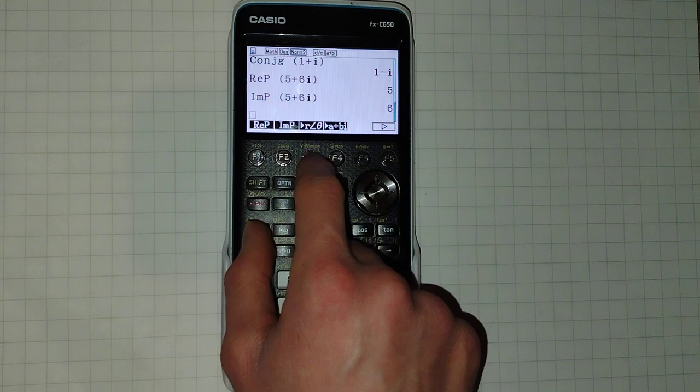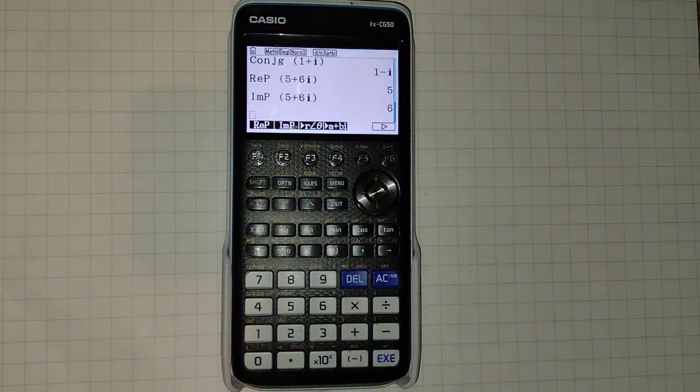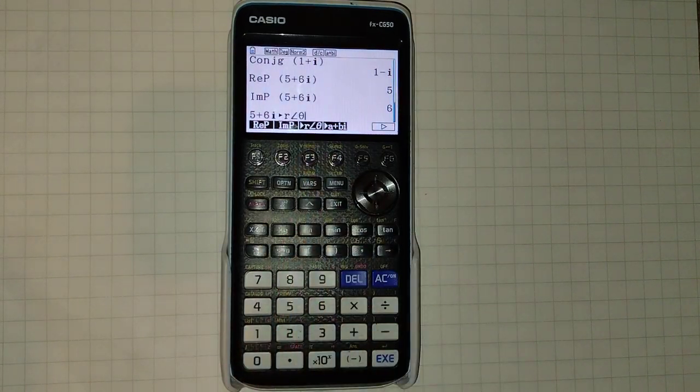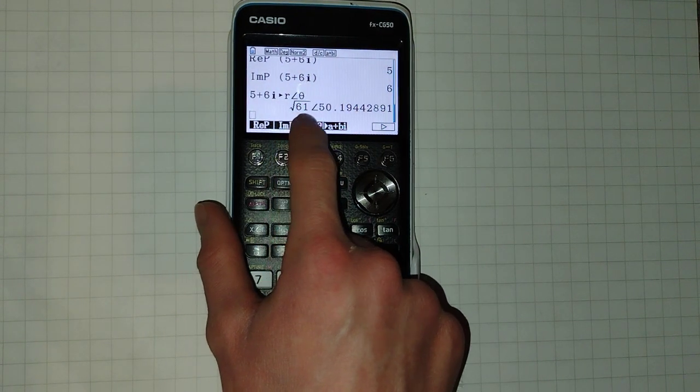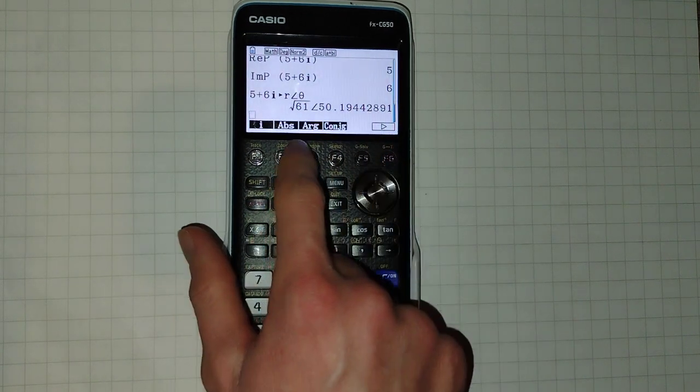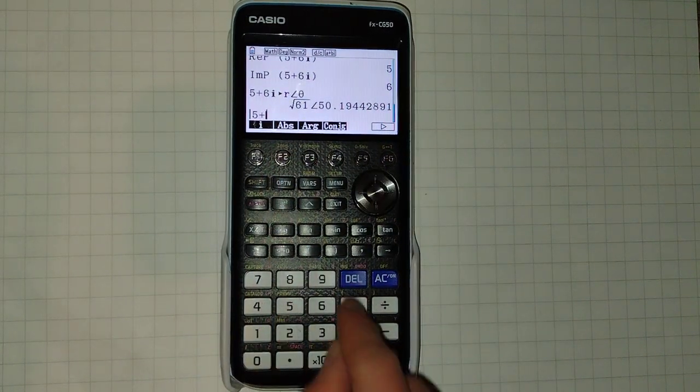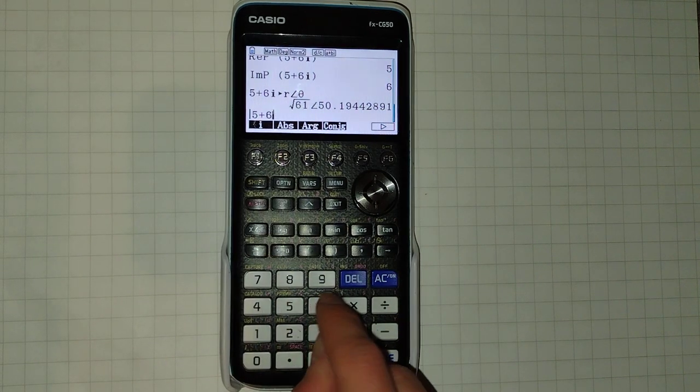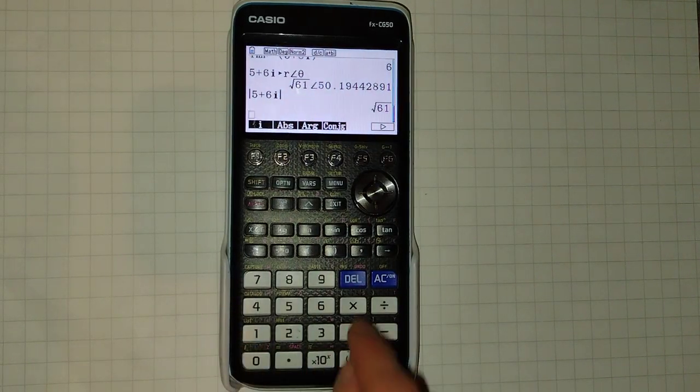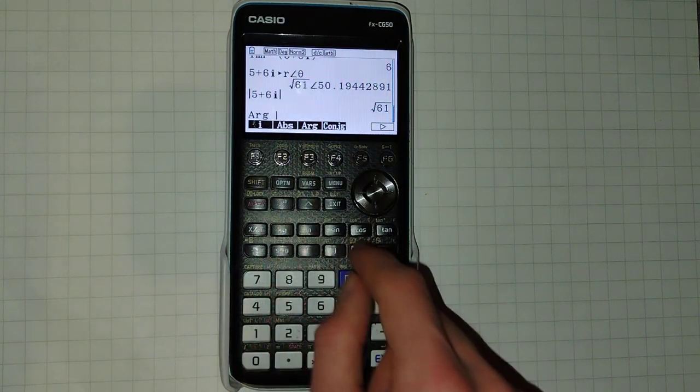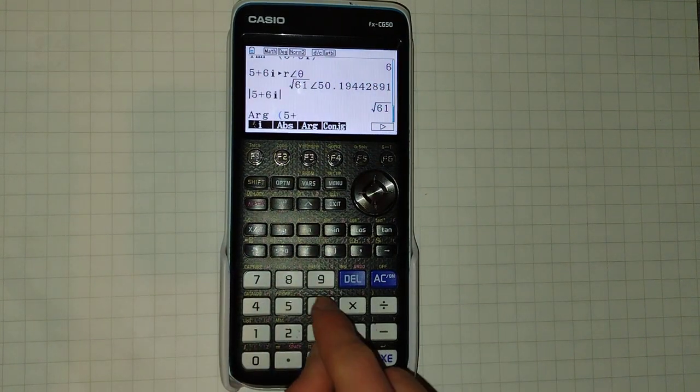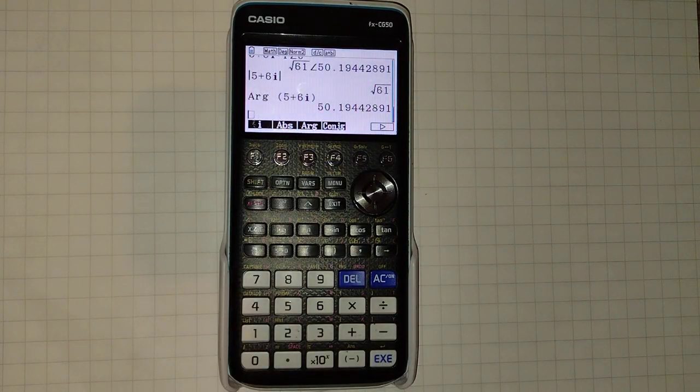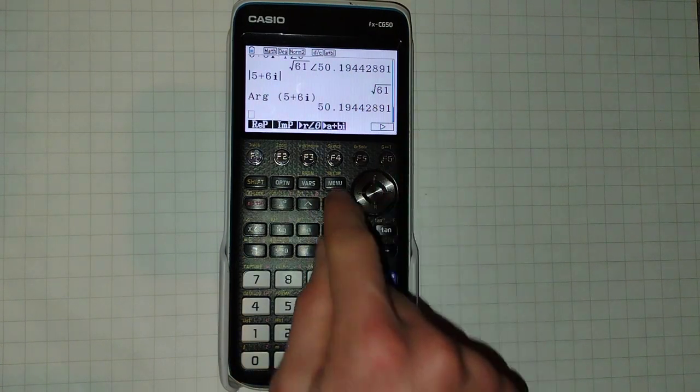These two are interesting. This one is useful to convert our number into modulus argument form. So as you can see, it will give us our modulus, root 61, followed by our argument. And sure enough, if you go back over here and get our absolute value of this complex number, we will get root 61. And if we get our argument of this, we will get 50.19442891.